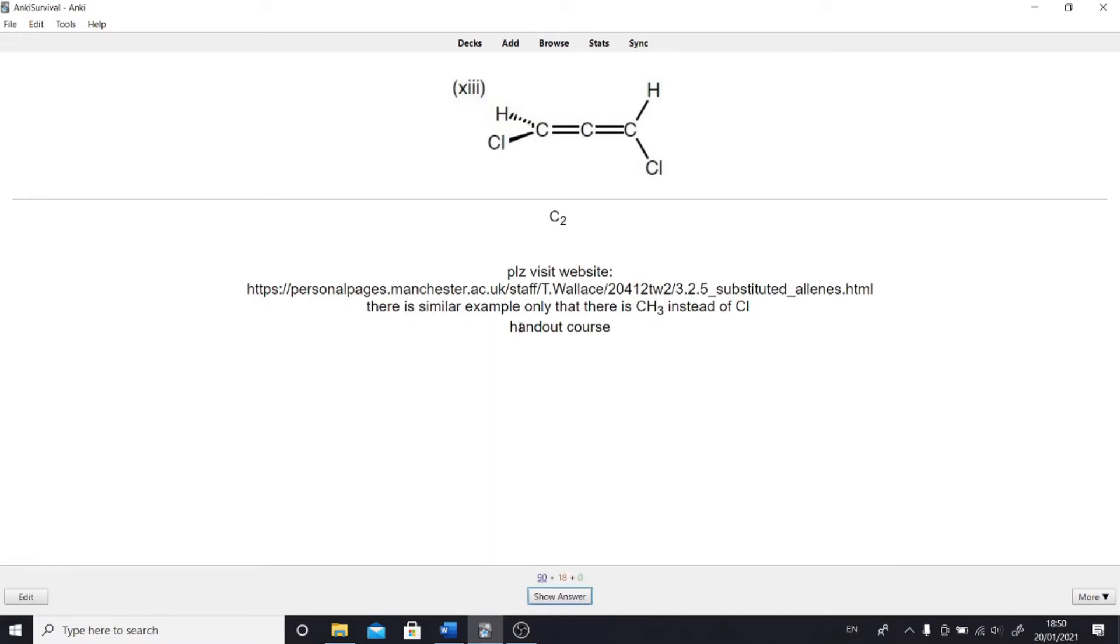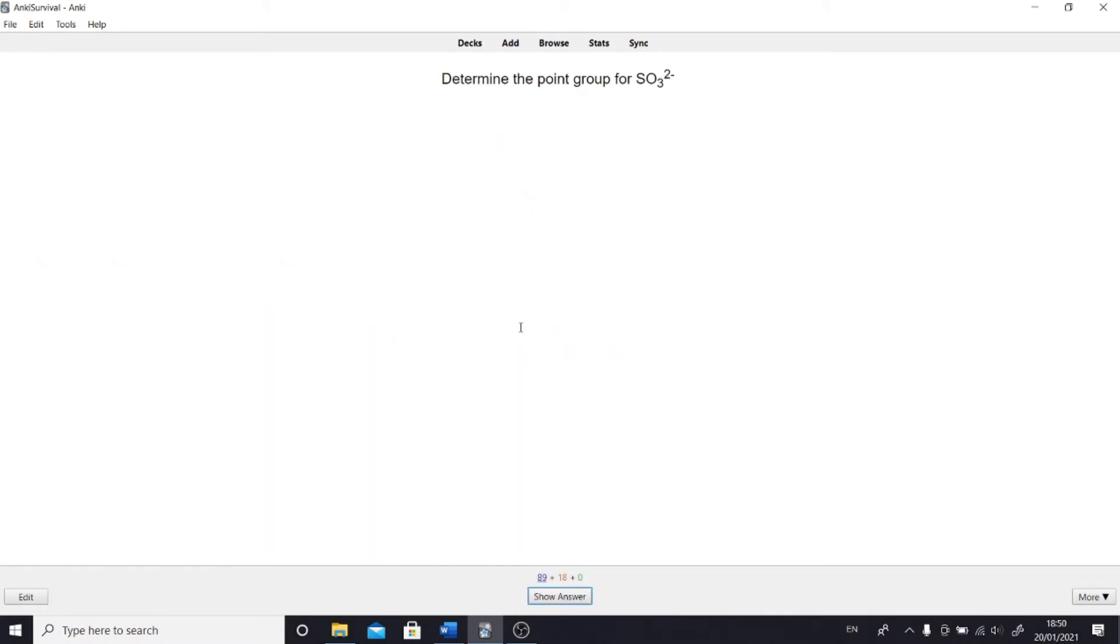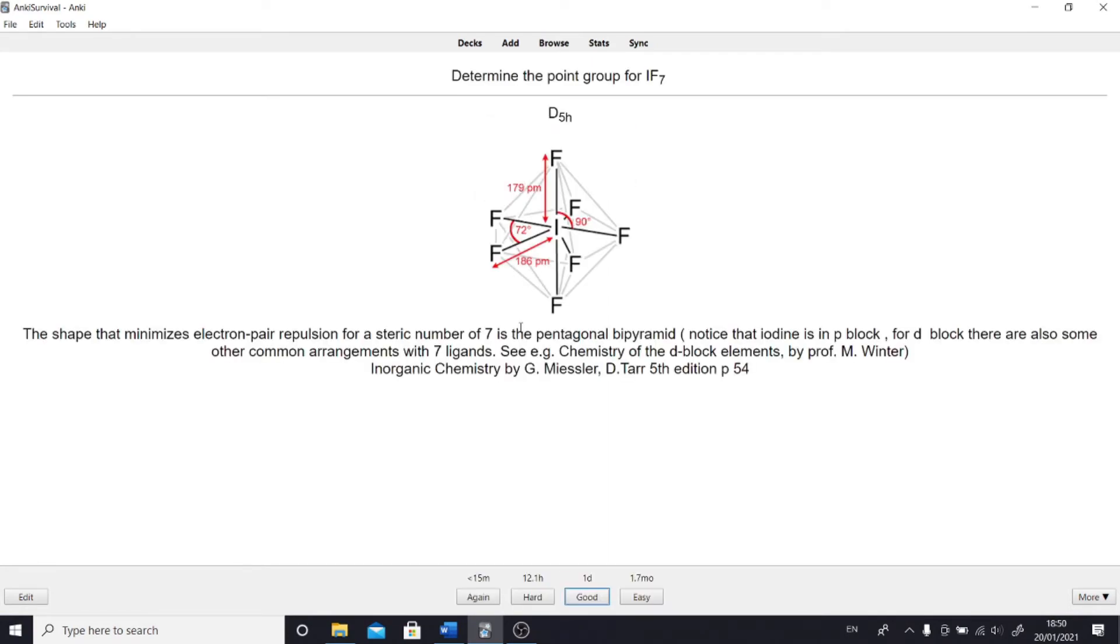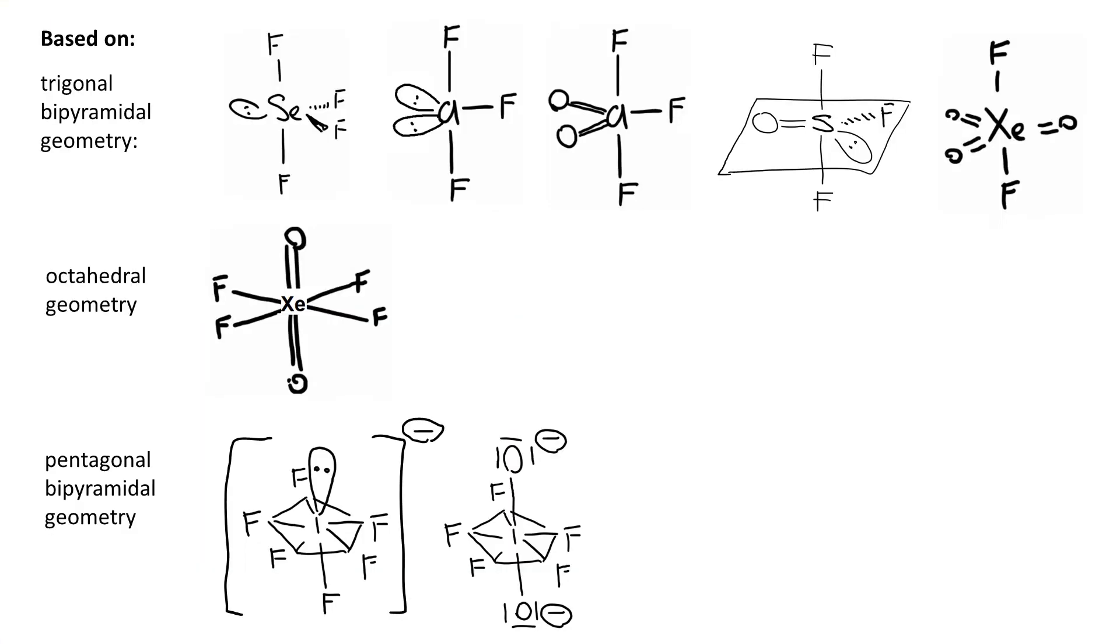I suspect some of you will struggle with VSEPR. So in the comment field of most of the flashcards, I also outlined the electron count and justified the shape. The only thing I would like to remind you is that more spatially demanding domains like lone pairs or ligands like oxygen, which are bound to the central atom through double bonds, they like to have more space.